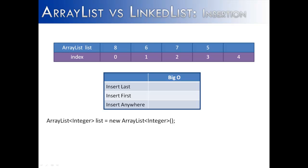If I had an ArrayList that had four items in it — 8, 6, 7, and 5 — with their indexes indicated below each value, I want to see what happens if I insert an item to the end of the ArrayList. It's going to have a big O of constant time because the computer knows where the end of an ArrayList is, so no matter the size of the list, inserting at the end takes the same amount of time — a big O of 1. If I call list.add(3), it's going to add it to the end of the list with a big O of 1.